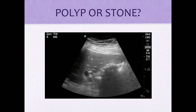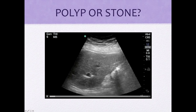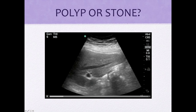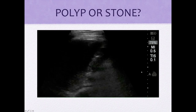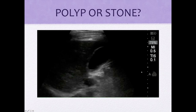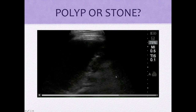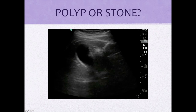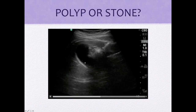So what do you think — polyp or stone? Stone, right? See, here's your gallbladder filled to the brim with stone — look at that shadowing it creates. How about this one? Gallbladder polyps — echogenic foci, and you really don't see any acoustic shadowing. And this? That's right, gallbladder polyp — that echogenic area right there, no acoustic shadowing.